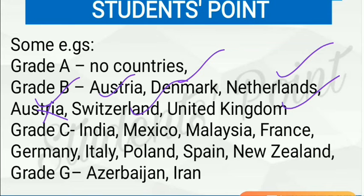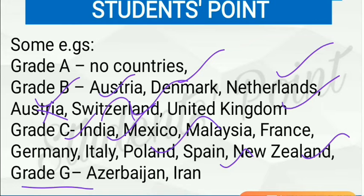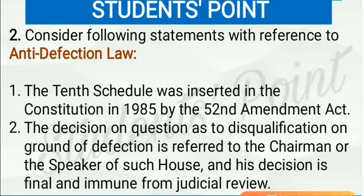In grade C, along with India, we have Germany, Italy, Poland, Spain, and New Zealand. In grade G, we have Azerbaijan and Iran.